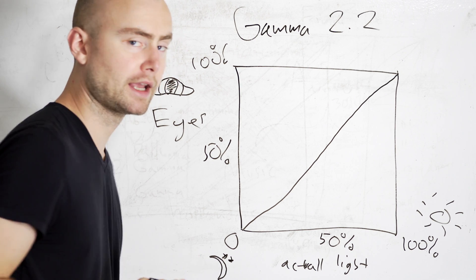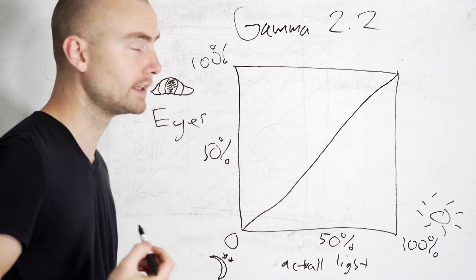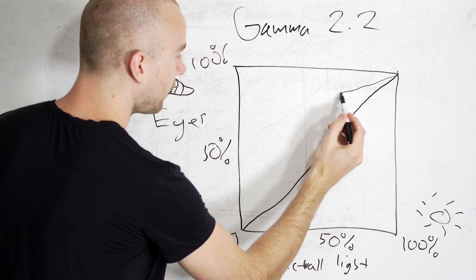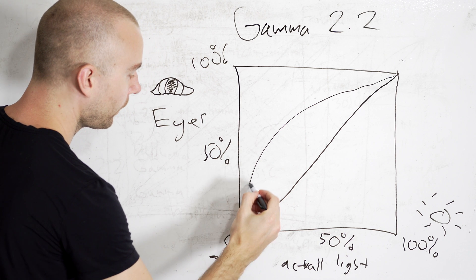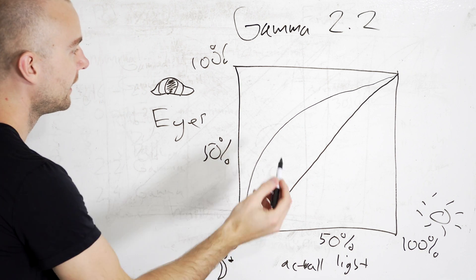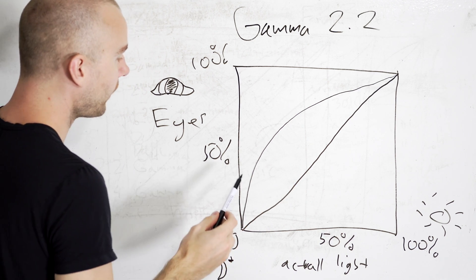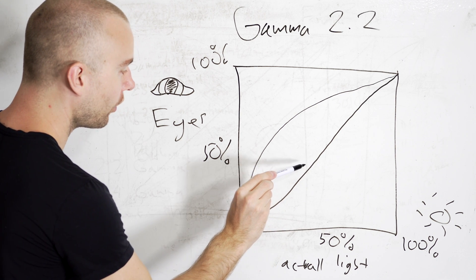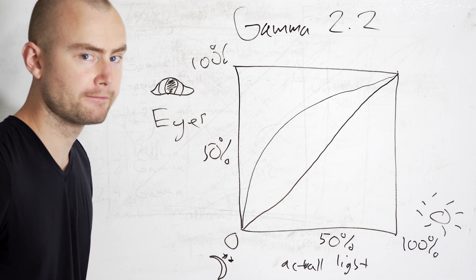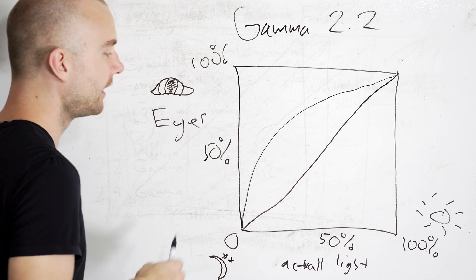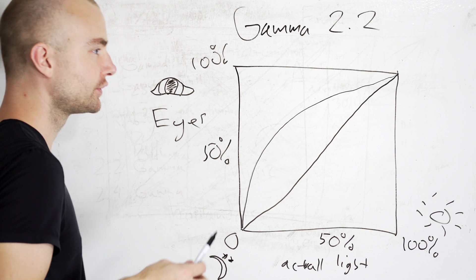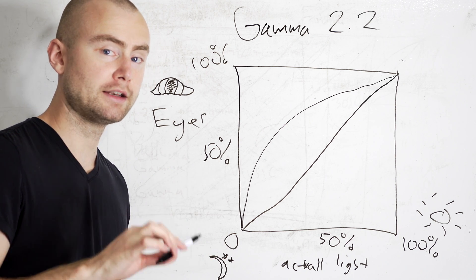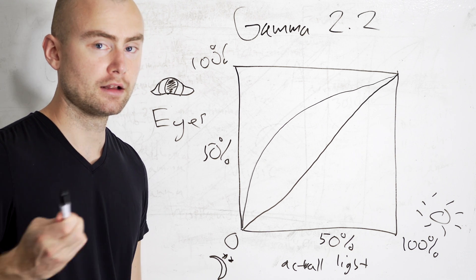Now to make things complicated, this is not how we see light. How we see light is more logarithmic, meaning it's curved. So when the actual light is 50%, we're only actually perceiving about 25%. And this happens because we need to be able to see in very low light as well as very bright light like the day.